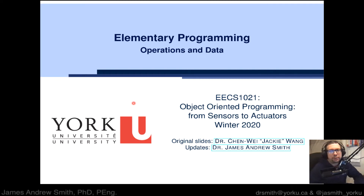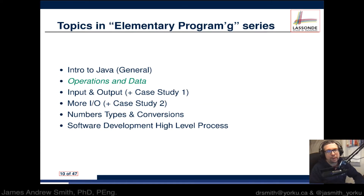Hi everyone. This is the second video in the series on elementary programming for EECS 1021, object-oriented programming from sensors to actuators. We're talking about Java operations and data. Today we're going to be doing operations and data. This comes after the intro to Java. We're going to be talking about input and output, the number types and conversions, and then the software development process later on.